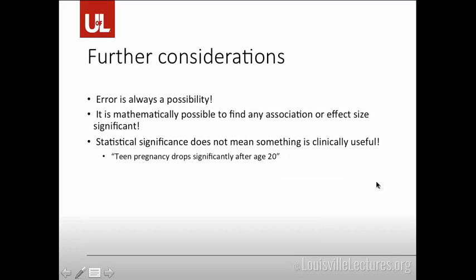Error is always a possibility, regardless of how good your results are, and it's mathematically possible to find any association or effect size that's significant. Just because you find something that's significant doesn't necessarily mean it's going to be clinically useful. A good example of this is the idea that "teen pregnancy drops significantly after age 20" — of course it does, because they're no longer teenagers. You may come up with a 1% difference in outcome between two groups, but does that actually mean anything practically? You should always consider the effect size of what you have.